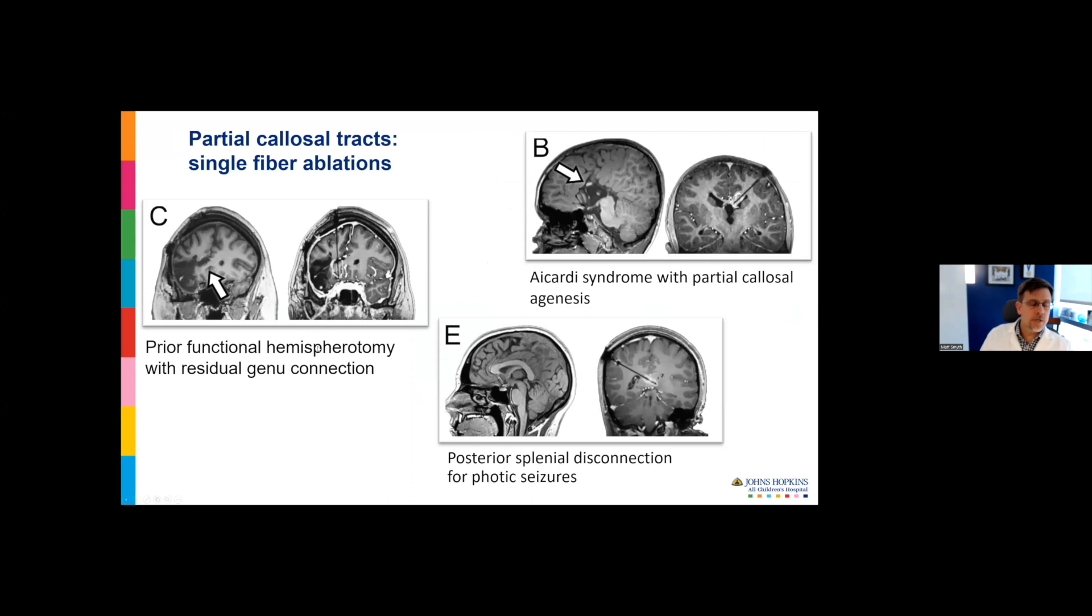We also used the laser for a couple other partial callosal disconnections. I wanted to gain experience with the technique before doing bigger ablations. Here's a patient who went to functional hemispherotomy on the right side with a little residual genu and inferior frontal lobe. We did a single fiber ablation. It didn't impact her seizure outcomes, but it was an easy ablation to perform. She went home the next day, no morbidity.